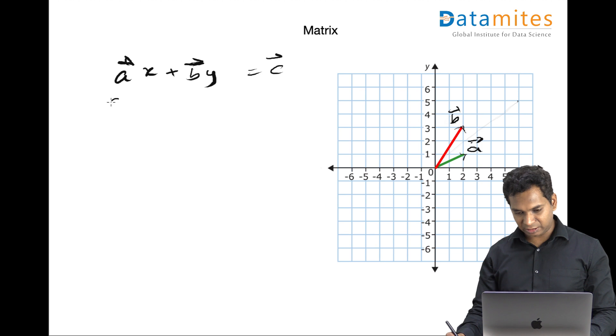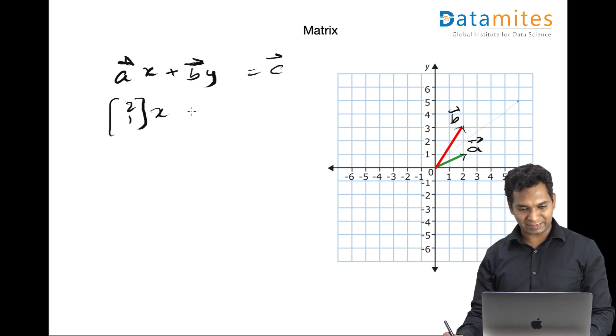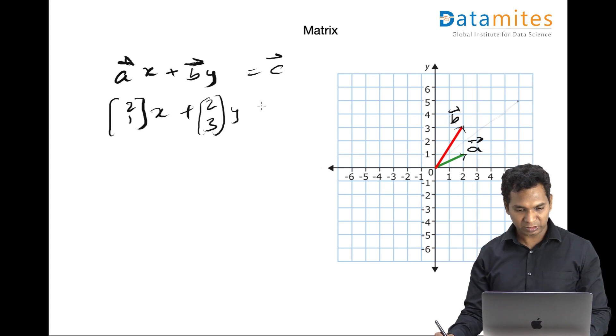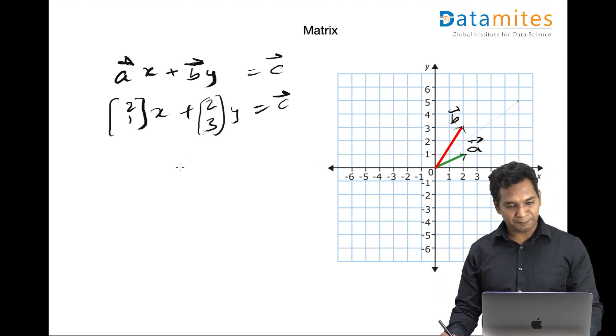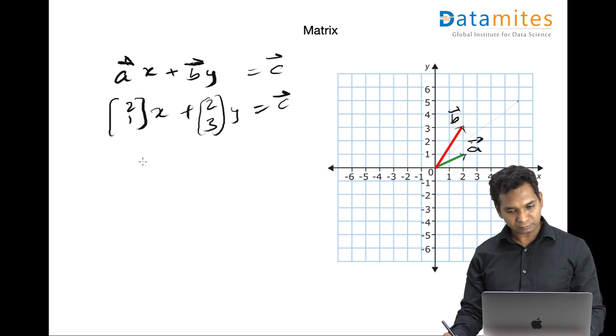So a is (2, 1), I don't know what is x, and b is (2, 3), and that gives you the c vector.